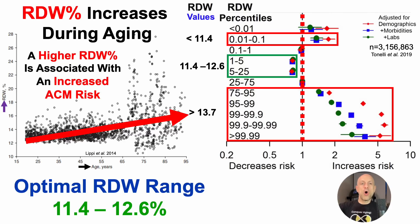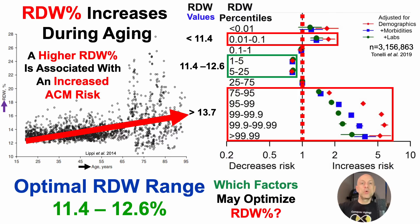In terms of what's optimal for the RDW, based on the all-cause mortality data, 11.4 to 12.6. And when considering the aging data, we don't want any age-related increase even within that optimal range — we want to try to resist any age-related increase for the RDW. Which brings us to which factors may optimize it.